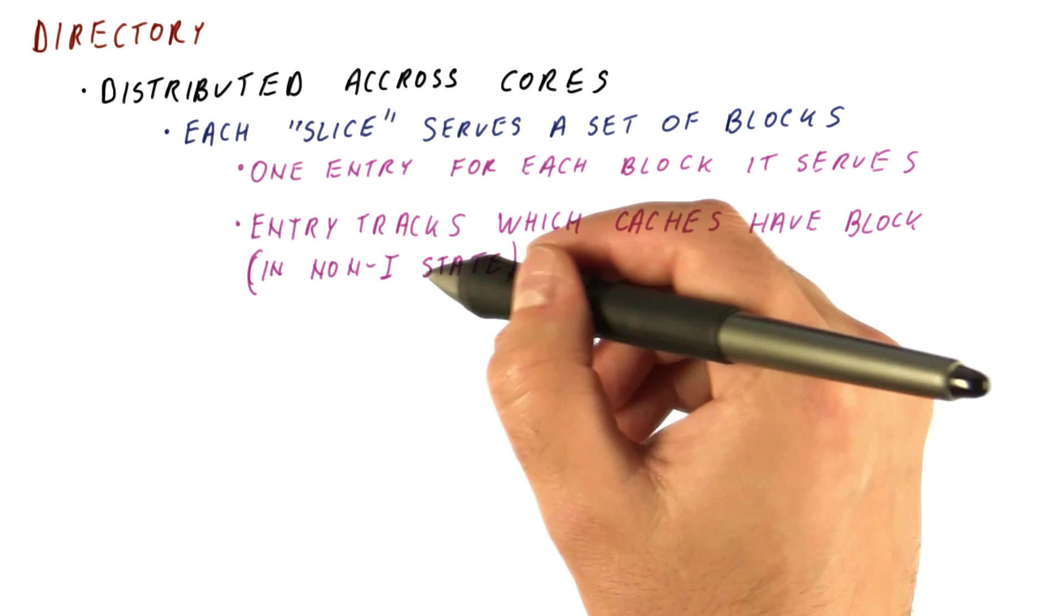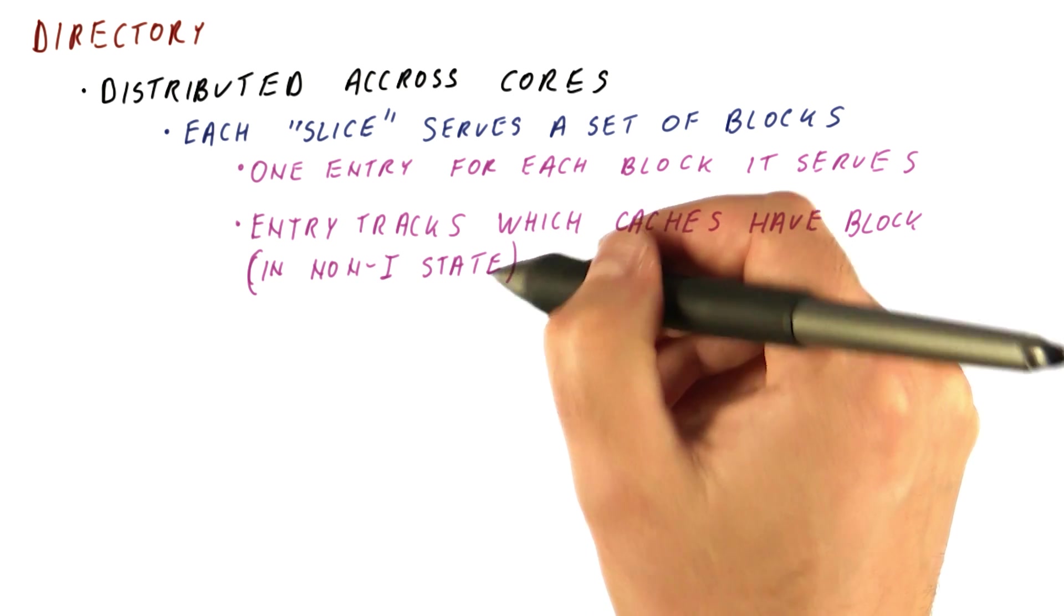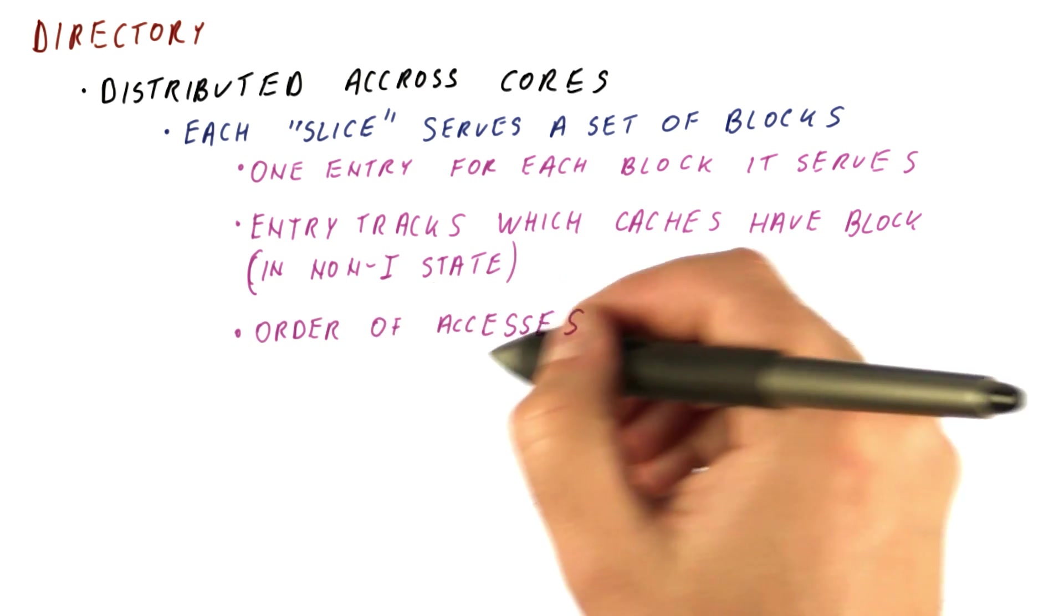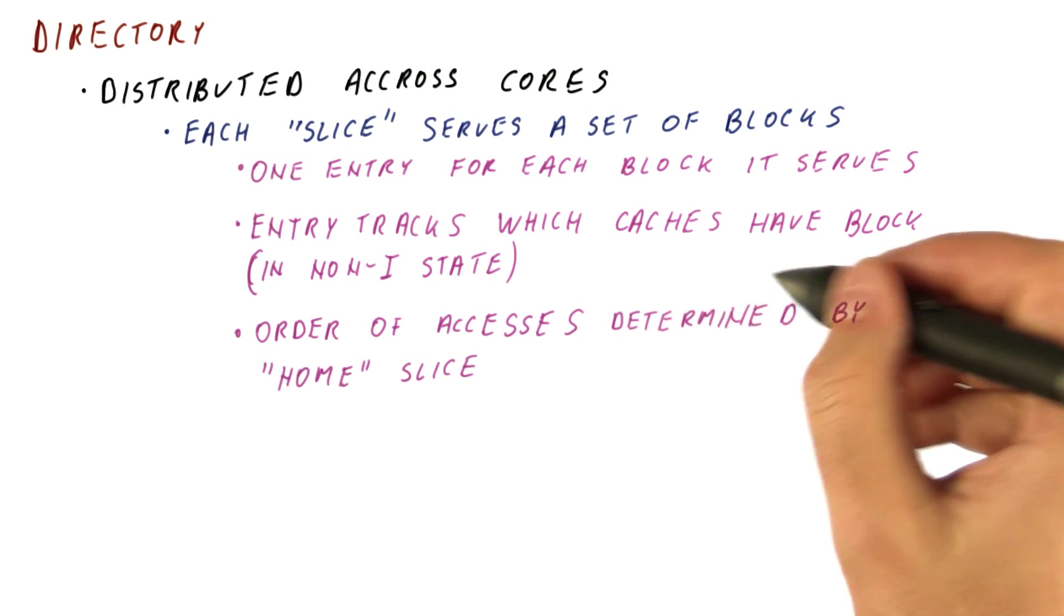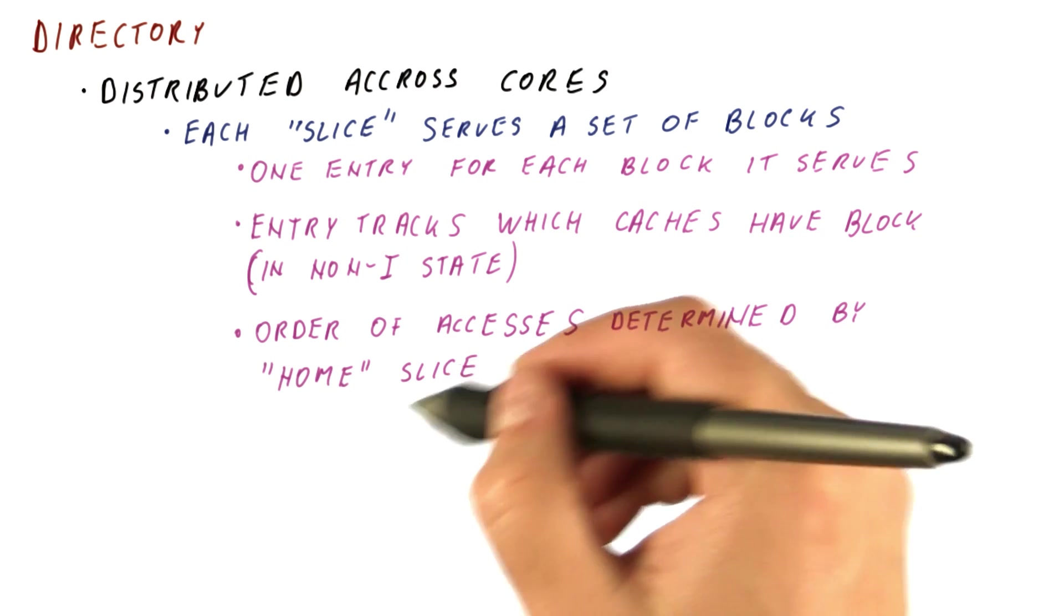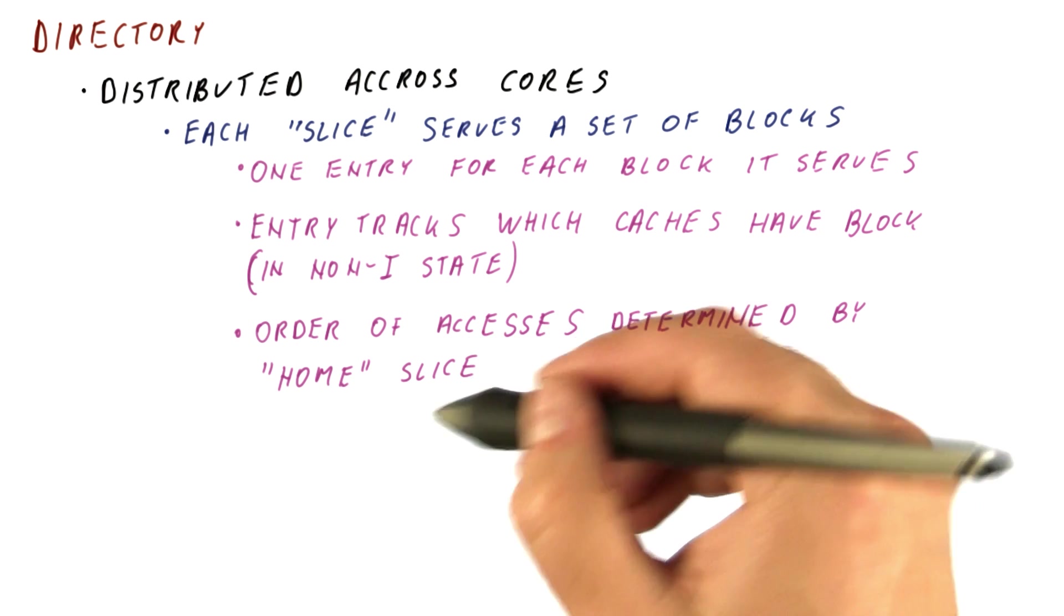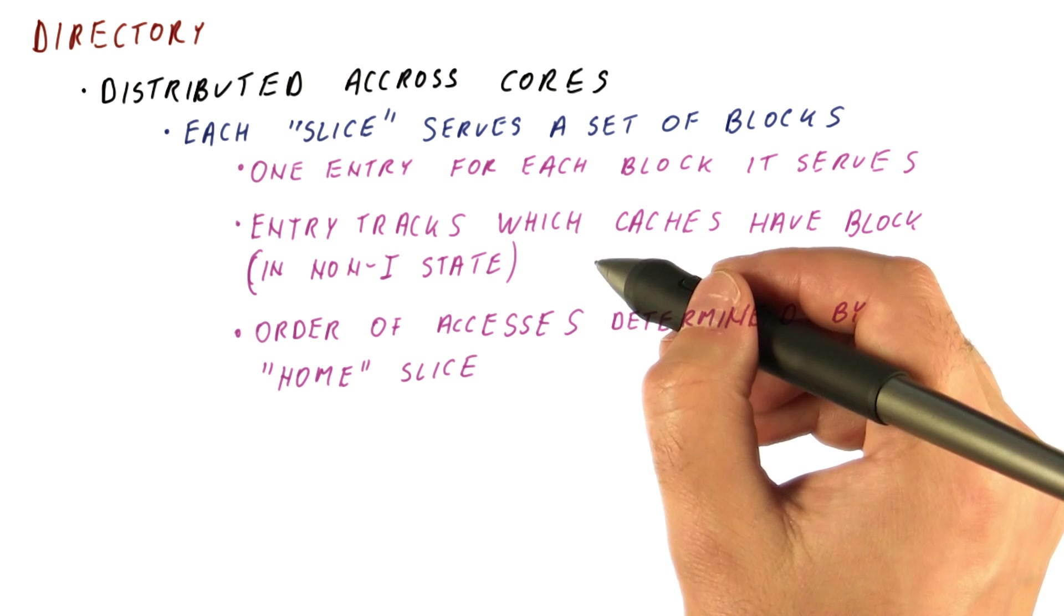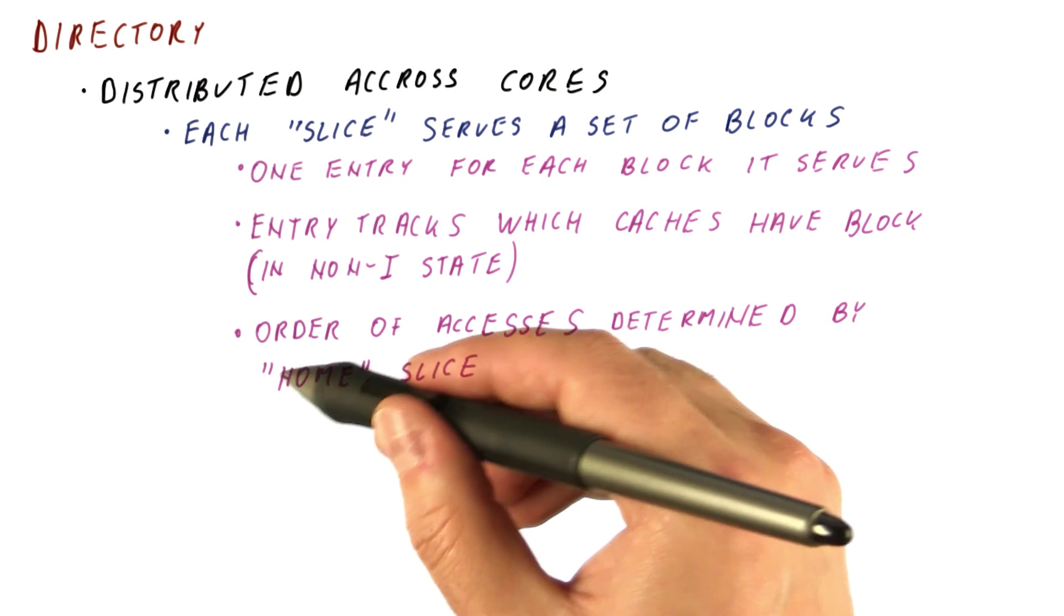Because the block in an invalid state is like it's not in that cache at all. And the order of accesses for a particular block is determined by the home slice for that block. That's the slice of the directory that has the entry for this block. We call that the home slice of the directory.